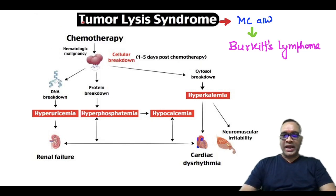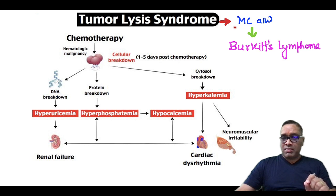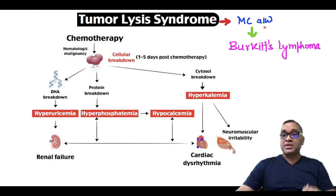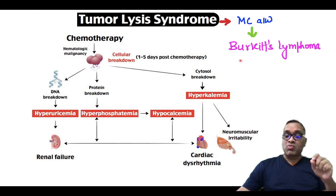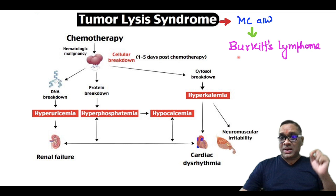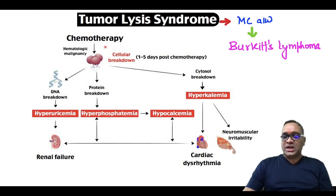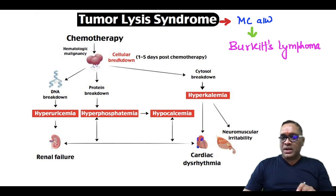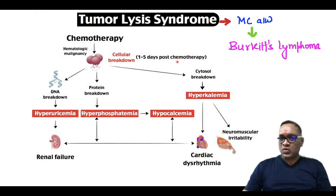In this video, I am going to tell you about Tumor Lysis Syndrome. Always remember it is most commonly associated with the most proliferative tumor of the human body, that is Burkitt's lymphoma. It usually starts after chemotherapy for these hematological malignancies, when cellular breakdown occurs.